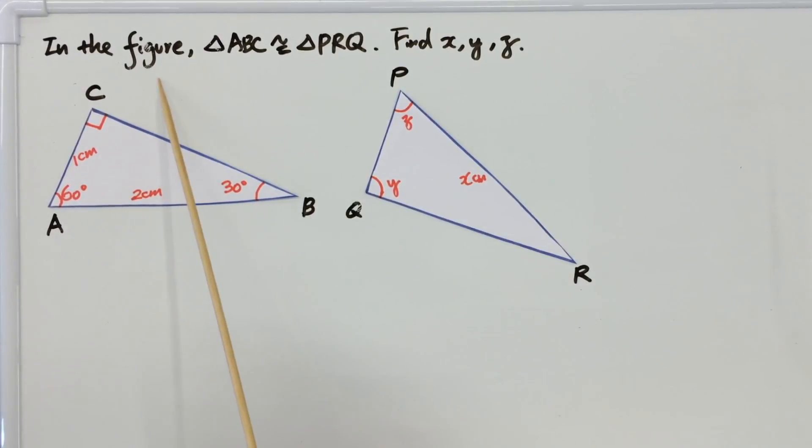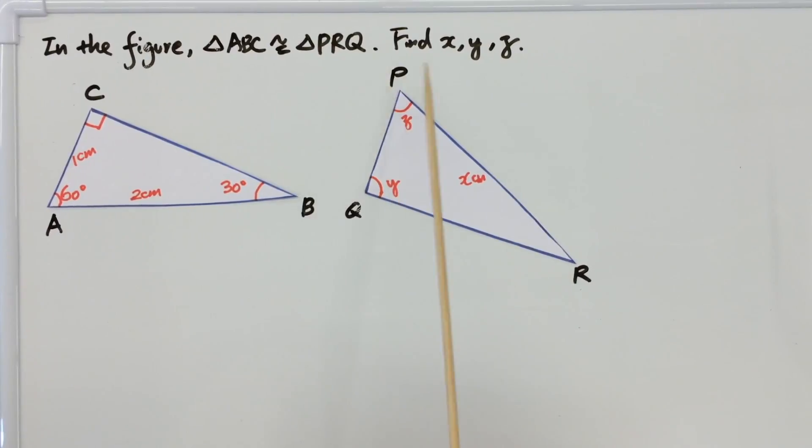Now let's look at another example. In the figure, triangle ABC and triangle PRQ are congruent. Find x, y, z.